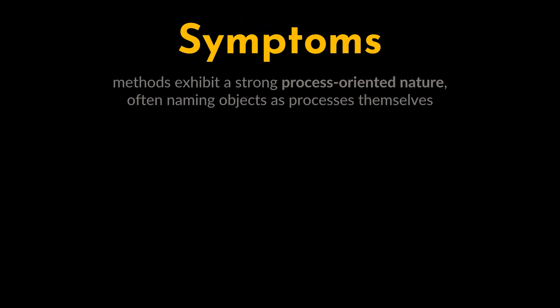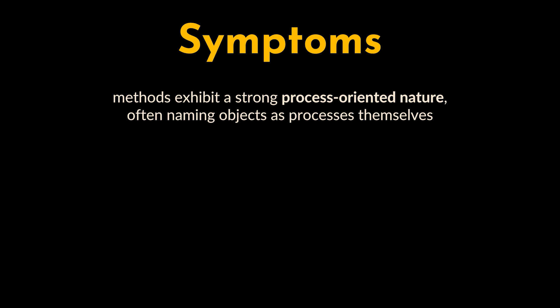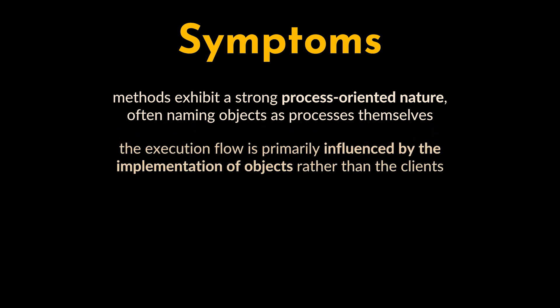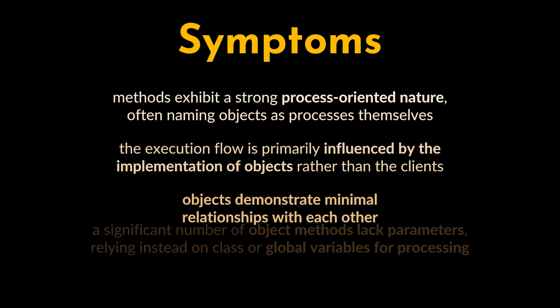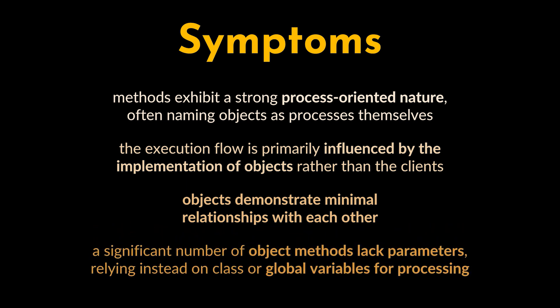Symptoms of spaghetti code become evident through various indicators: object methods exhibit a strong process-oriented nature, often naming objects as processes themselves. The execution flow is primarily influenced by the implementation of objects rather than the clients utilizing them. Objects demonstrate minimal interrelationships with each other, and a significant number of object methods lack parameters, relying instead on class or global variables for processing.